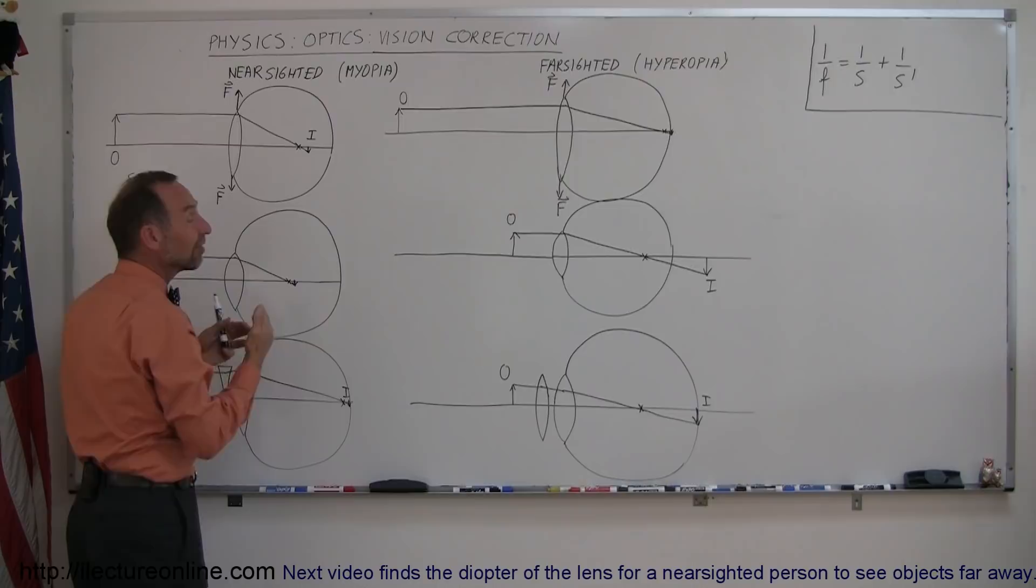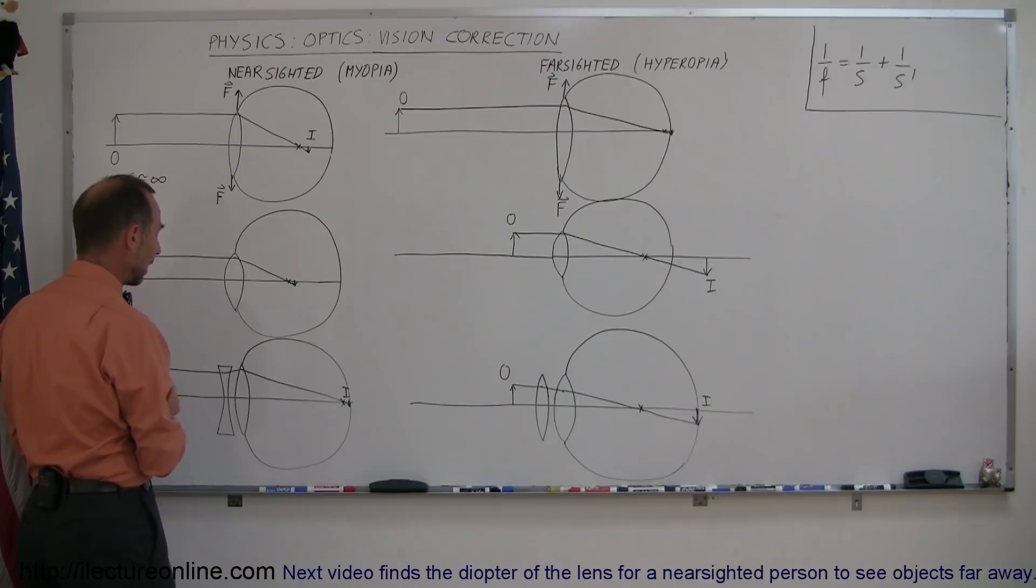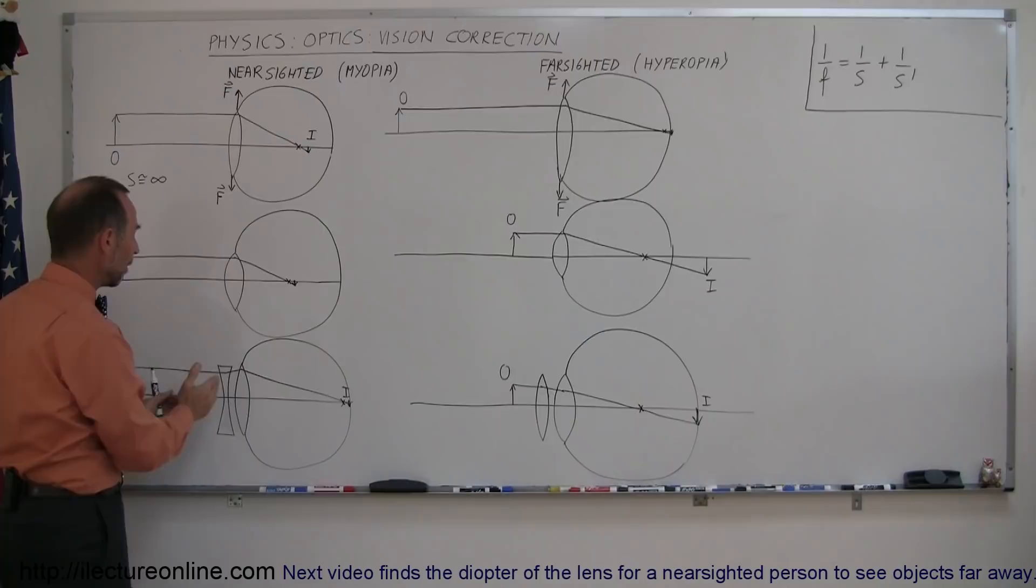So the only thing left to do is put a corrective lens in front of the eyeball, and of course that's not typically what the lens looks like, but I just wanted the shape of a diverging lens because that causes the rays to diverge a little bit further.